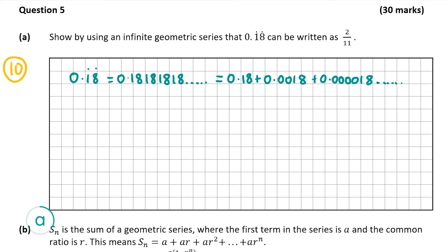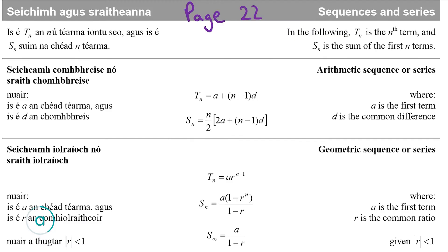This is going to be a sum to infinity, and it tells us to use an infinite geometric series so we can hopefully show that it's equal to 2 over 11. We can use the formula for an infinite geometric series, which is on page 22 of our formula and tables book. The formula is: S to infinity is equal to a over 1 minus r, where a is the first term and r is the common ratio — the ratio between two consecutive terms.